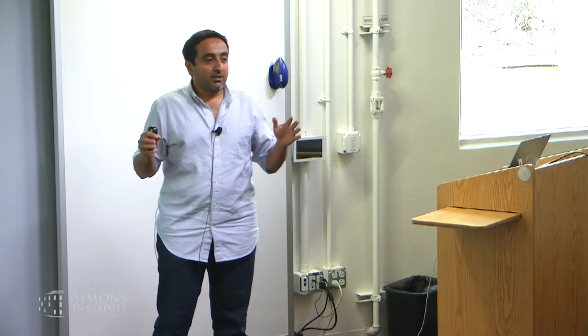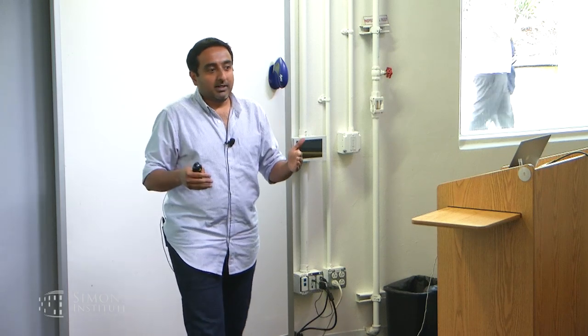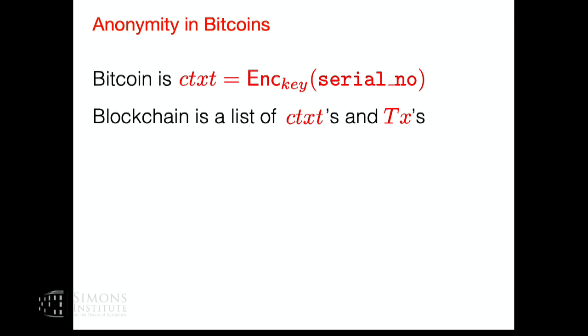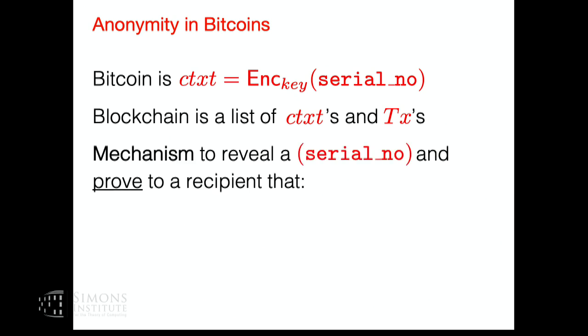For me, bitcoin is a cryptocurrency where I think of a unit of currency as a ciphertext. It is identified by a key—the person who has the key owns the coin—and the serial number identifies this coin. The blockchain is a list of ciphertexts and transactions. What we want in such a framework for anonymity is a mechanism for transferring money: one party who owns the coin proves to another party that it owns the coin.